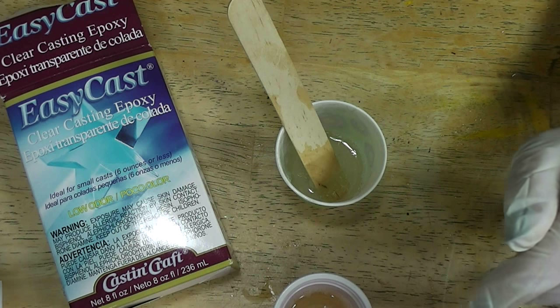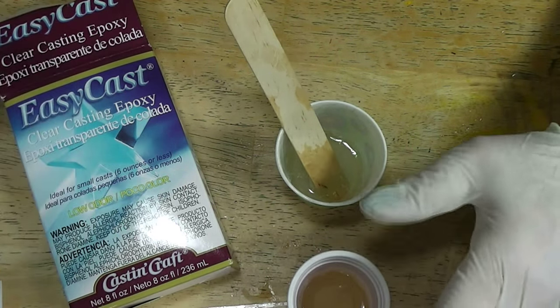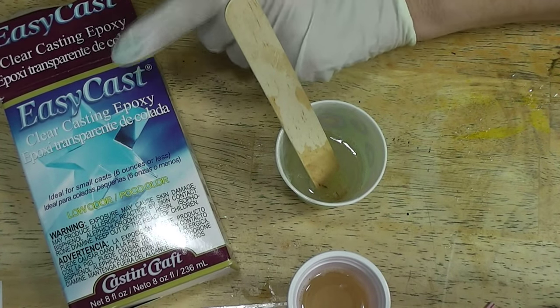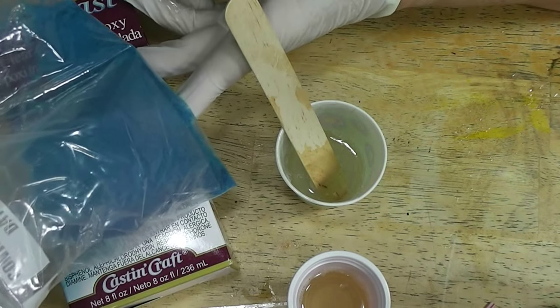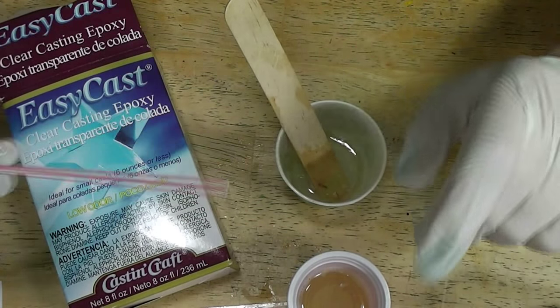So we are going to make slushies in ours. We're starting out, we're using the cups, and then we're going to use Easy Cast Resin, or you could use Envirotex Lite if you prefer. I like this brand because it doesn't smell as bad. And some blue craft sand, and a cocktail straw.